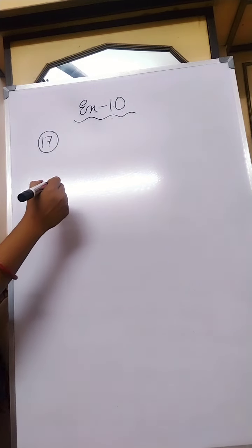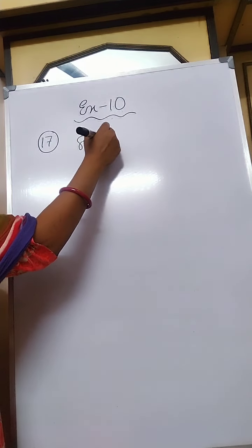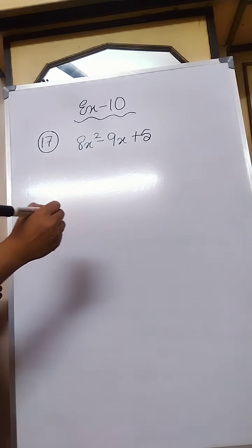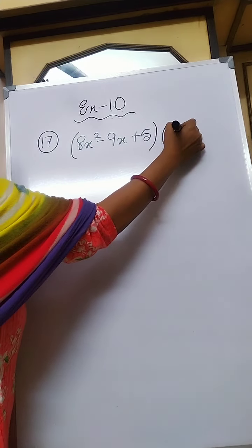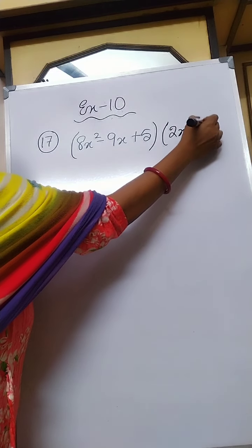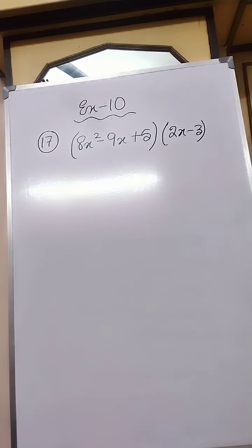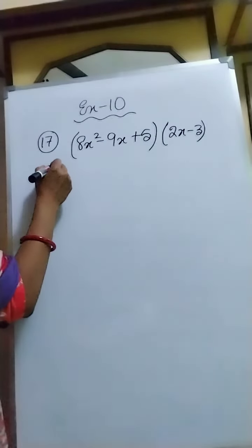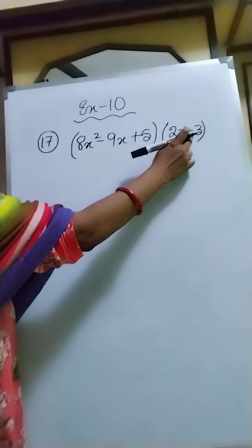So let's start with sum number 17 of exercise 10. In sum number 17, it is given that 8x squared minus 9x plus 5, multiplied by 2x minus 3. You have to multiply both these terms.